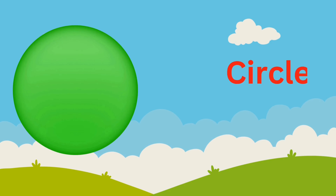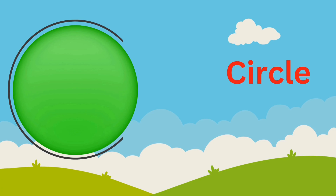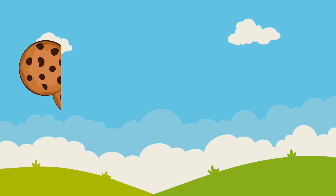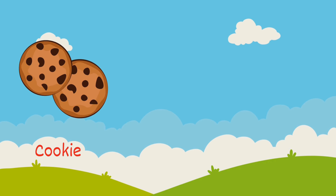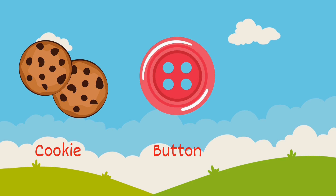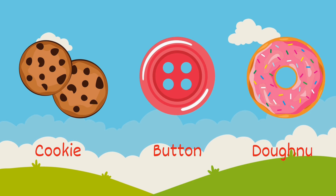The next shape we have is circle. A circle is round in shape. It doesn't have any sides or corners. Let's see which objects we have in our surroundings which are circular in shape. Cookie, button, donut — they are circular in shape.